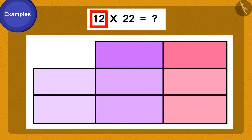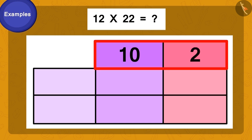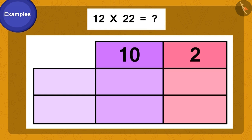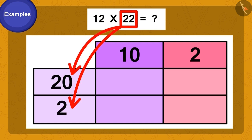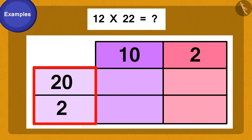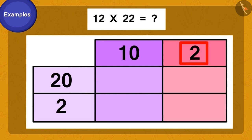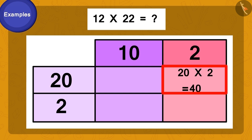How can we split 12? 10 and 2. We will write it this way. And how can we now split 22? 20 and 2. We will write it this way. Now we first multiply the 2 of 12 by 20 of 22. 20 times 2 is 40. We will write this answer here. Now we multiply 10 by 20. 20 times 10 is 200. We will write this answer here.